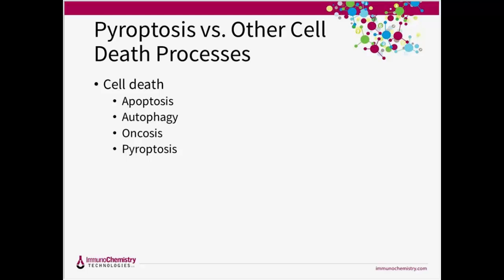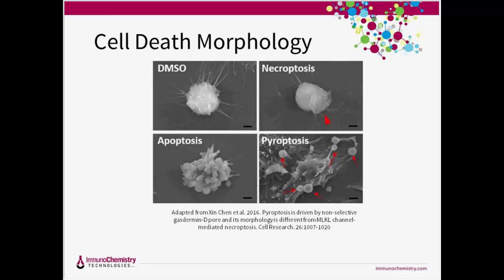Pyroptosis is triggered by infection, and infected cells will eventually swell, burst, and die. This attracts other immune cells to fight the infection, leading to inflammation of the tissue and, in a functional response, rapid clearing of that infection. Unlike apoptosis, pyroptotic cell death results in plasma membrane rupture and subsequent release of intracellular contents, resulting in the inflammatory characteristic of this process. This is in contrast to apoptosis, where cellular contents are packaged into apoptotic bodies that are ultimately taken up by phagocytic cells in a non-inflammatory manner.